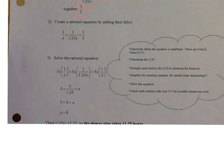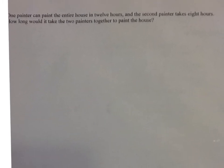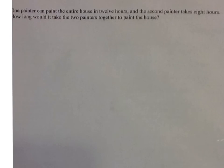So flip your paper over and we'll work on the problem on the back. So this says one painter can paint the entire house in 12 hours. And the second painter takes 8 hours. How long will it take two painters to paint the house together? So I want to do painter 1 plus painter 2 equals the together.